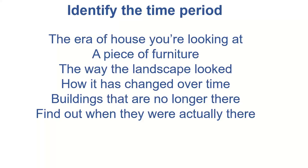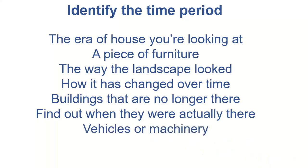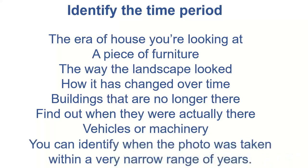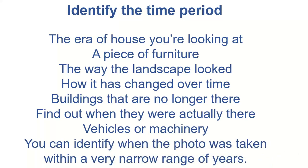Another thing that can help you date a photograph is whether there are vehicles or machinery in it. Cars have changed over the years pretty consistently. Is it modern machinery, old machinery, or horse-drawn? You can identify when the photo was taken within a very narrow range based on vehicles.